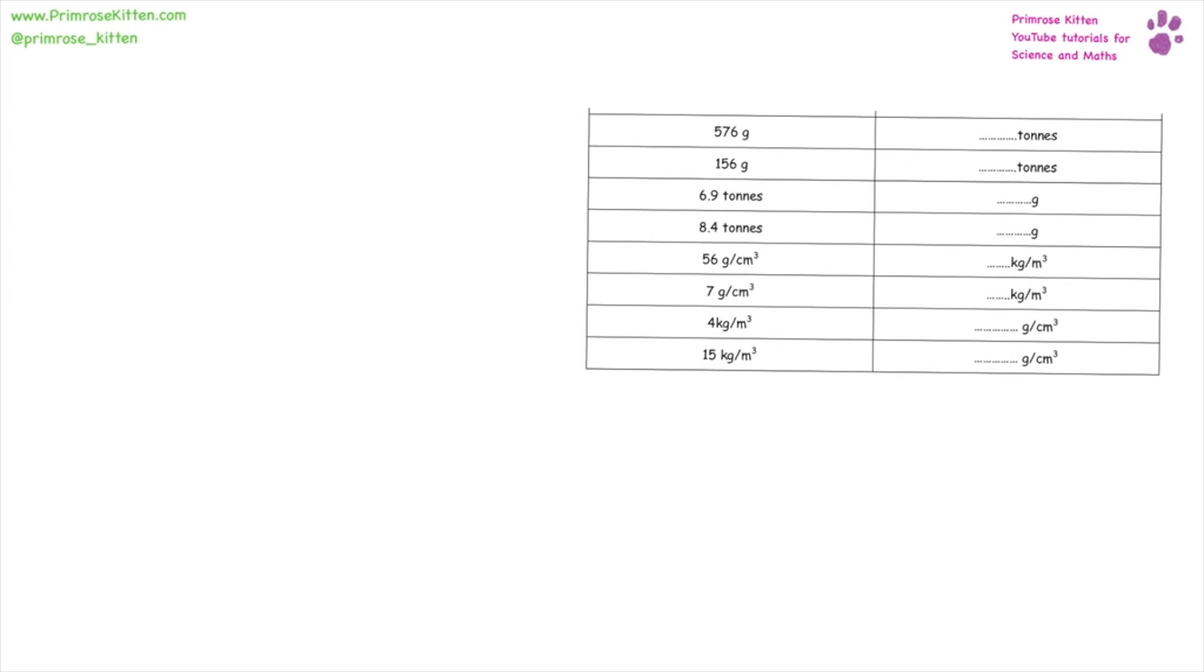From grams to tons, there's quite a big jump. We need to divide by one, two, three, four, five, six zeros, and then from tons to grams, one, two, three, four, five, six.